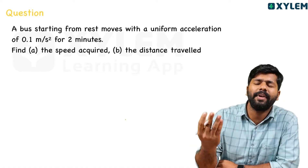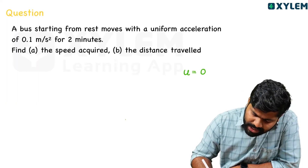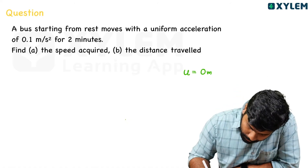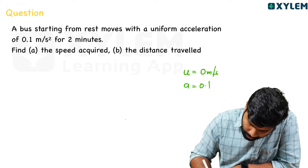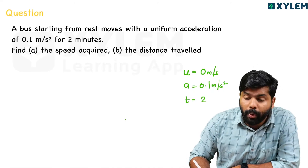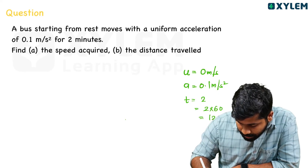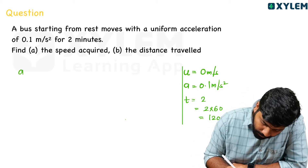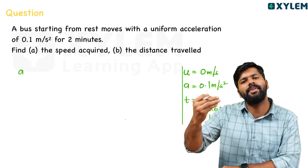A bus starting from rest means initial velocity u is equal to 0 m/s. With a uniform acceleration a equal to 0.1 m/s². Time t is equal to 2 minutes, which is 2 into 60 equal to 120 seconds. We need to find the speed acquired — the final velocity v after 120 seconds.